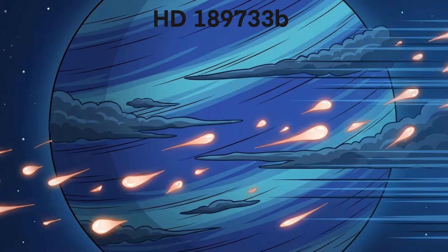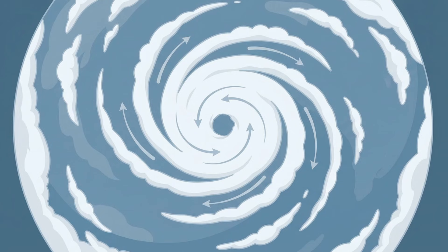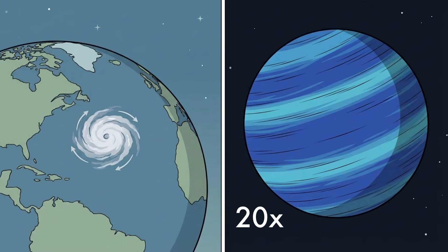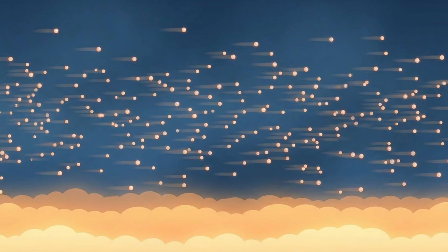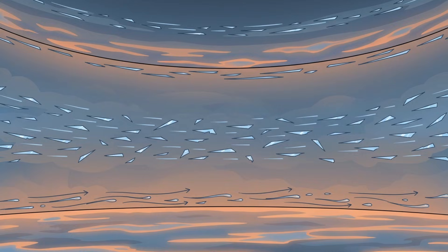Wind speeds on HD 189-733-b exceed 7,000 kilometers per hour. For comparison, the strongest hurricanes on Earth reach about 300 kilometers per hour. These winds are more than 20 times faster. When glass droplets form, they are blasted sideways at hypersonic speed. The rain does not fall vertically. It is driven horizontally, wrapping around the planet in continuous glass storms.